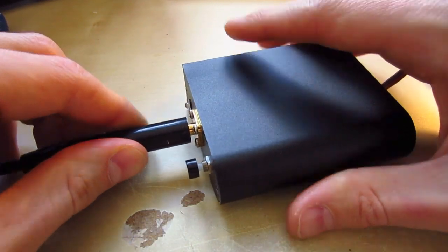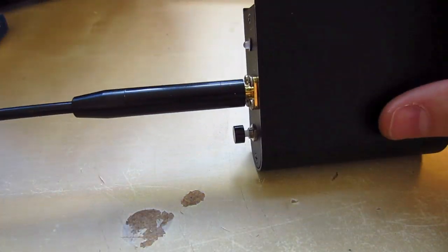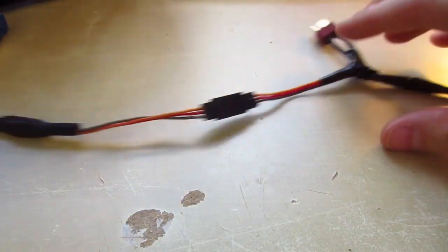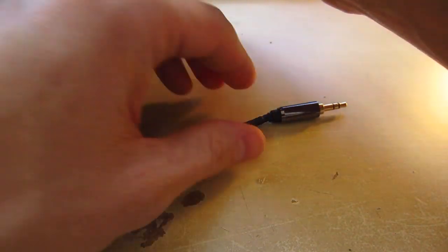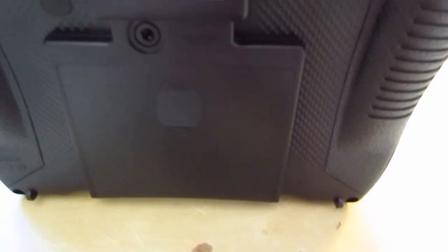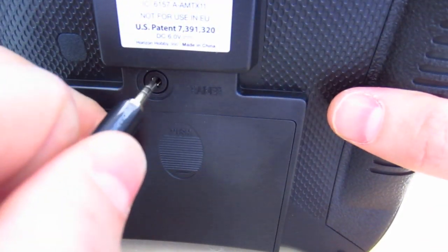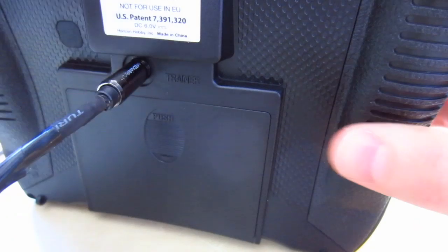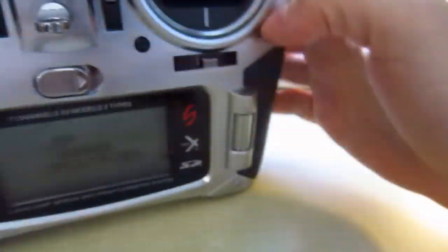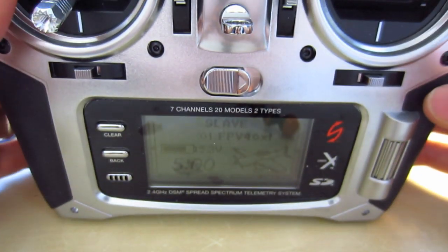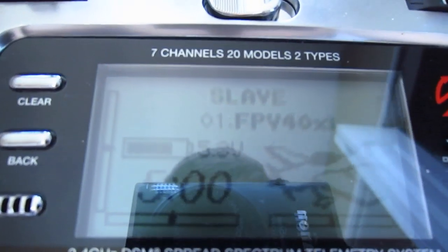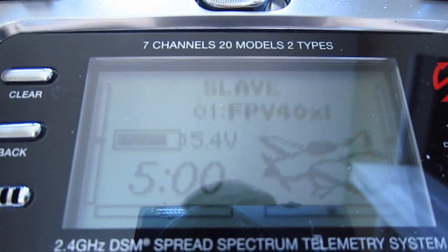Then once that's hooked up, you always want to have either antenna or the dummy load on your Dragon Link. Then you are going to hook this directly into the back of your DX7S, which will turn it on automatically.